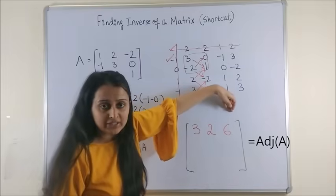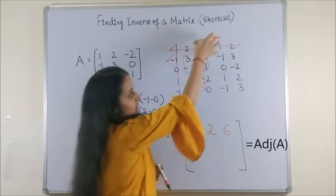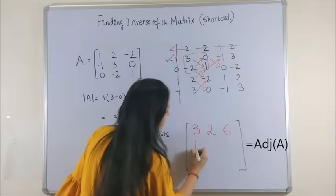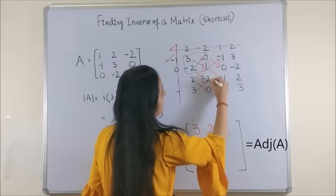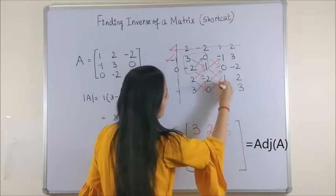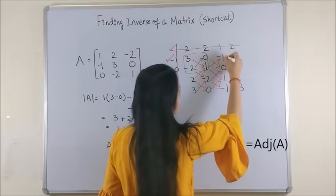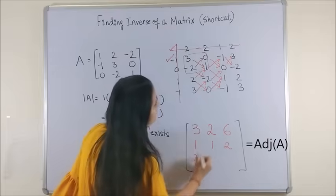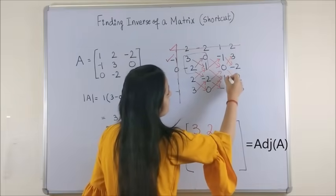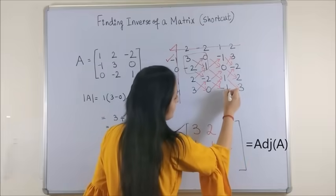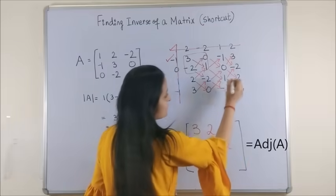Likewise for the second column, 0 minus of minus 1, that makes it 1. 1 minus 0, next 2 minus 0, next 2 minus 0 again, so it's 2. Next, 0 minus of minus 2 makes it plus 2. Next, 3 minus of minus 2, that makes it 5.